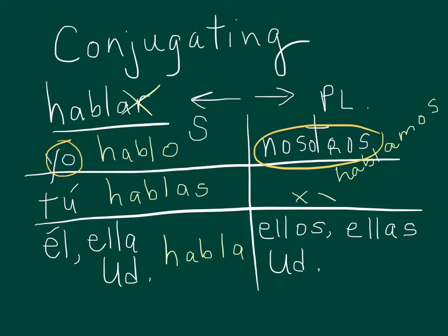Vosotros is the form that we talk about, but we don't really use much. And then the ellos, ellas, and ustedes pronouns would be matched up with a verb with an an ending on it. So that's just a reminder of what we've already been talking about in class.